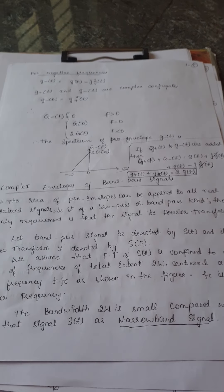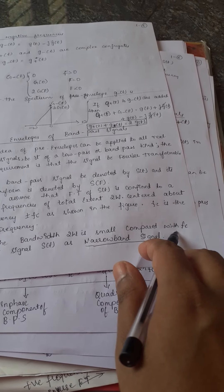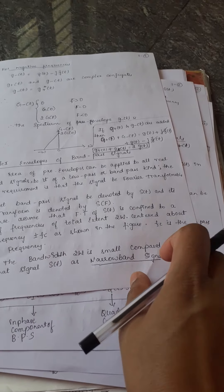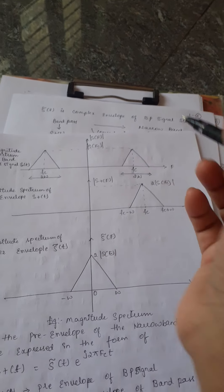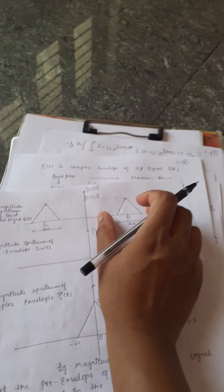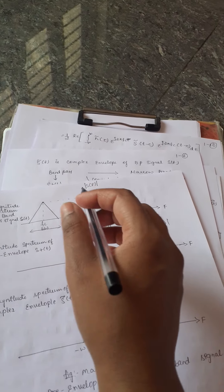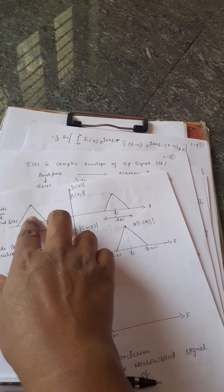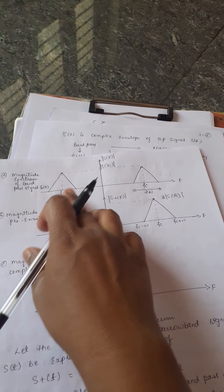As shown in the figure, the spectrum is centered about the carrier frequency FC, and the bandwidth 2Ω is small compared to the carrier frequency. When the bandwidth is small compared to the carrier frequency, that type of band pass signal is called a narrowband signal. The figure shows the magnitude spectrum of the band pass signal, which has a center frequency of FC and a bandwidth of 2Ω.